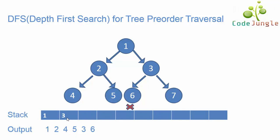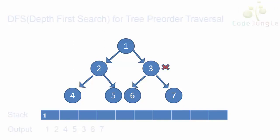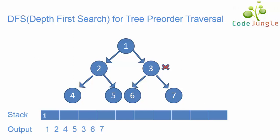Now the topmost element in the stack is 3. Hence system will see if there are any other child elements for 3 or not. The next child element for 3 is 7. Hence 7 has been included in the stack as well as in the output. Now as 7 is the topmost element in the stack we will see if there is a child element for 7 or not. As there are no more child elements for 7, hence 7 has been popped out of the stack. Again the next element in the stack is 3. We will check if there are any more child elements for 3, and as there are none, hence 3 has been popped out of the stack.